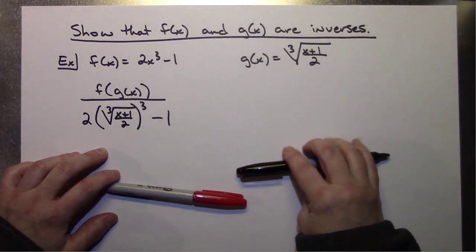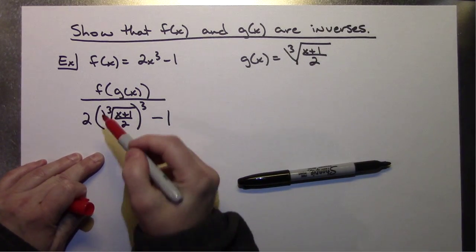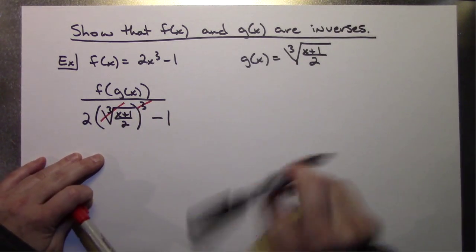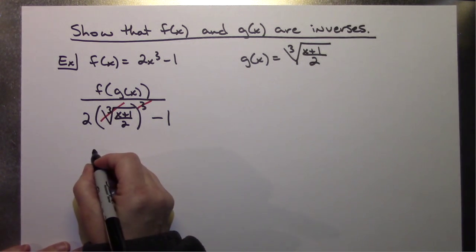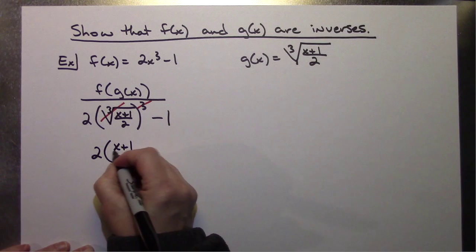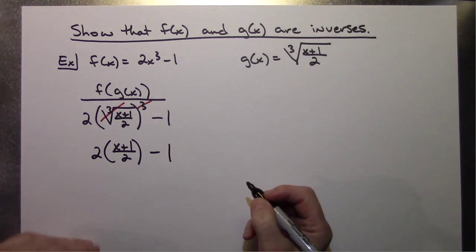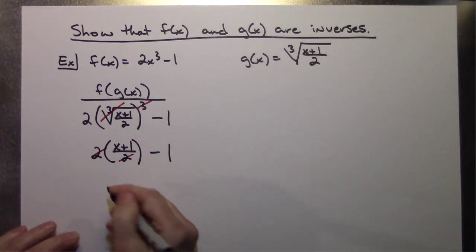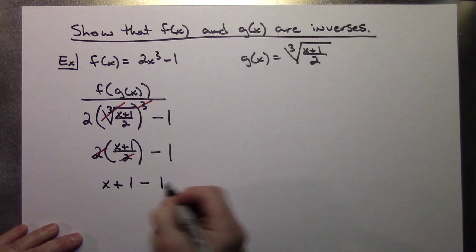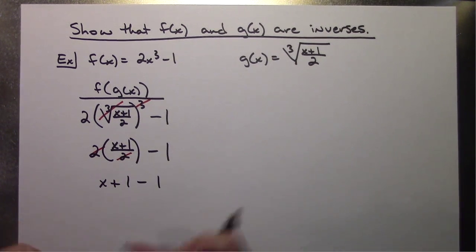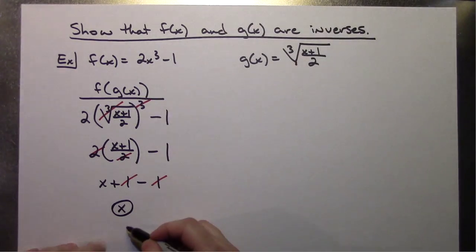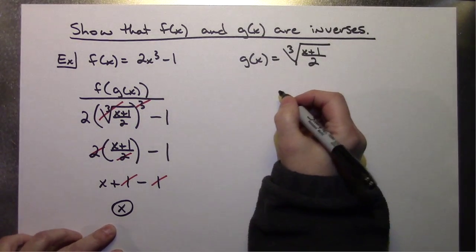Now simplifying algebraically: I see a cube root and something being cubed — those are inverse operations and will cancel. That simplifies to 2 times (X plus 1) all over 2, then minus 1. The 2's cancel, leaving X plus 1 minus 1. The 1 minus 1 cancels out, so F of G of X simplifies all the way down to just X.